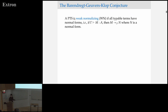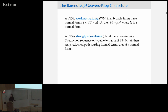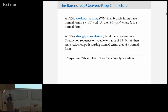A system is weakly normalizing if all of its typeable terms have normal forms, and it's strongly normalizing if there's no infinite reduction sequence from a typeable term. In this setting, we're only ever going to care about beta reduction, although I know there is some work on also considering beta-eta reduction in pure type systems. The Barendregt-Geuvers-Klop conjecture just says that weak normalization implies strong normalization for every pure type system — a fairly simple statement. The best conjectures are the ones that are very easy to understand.